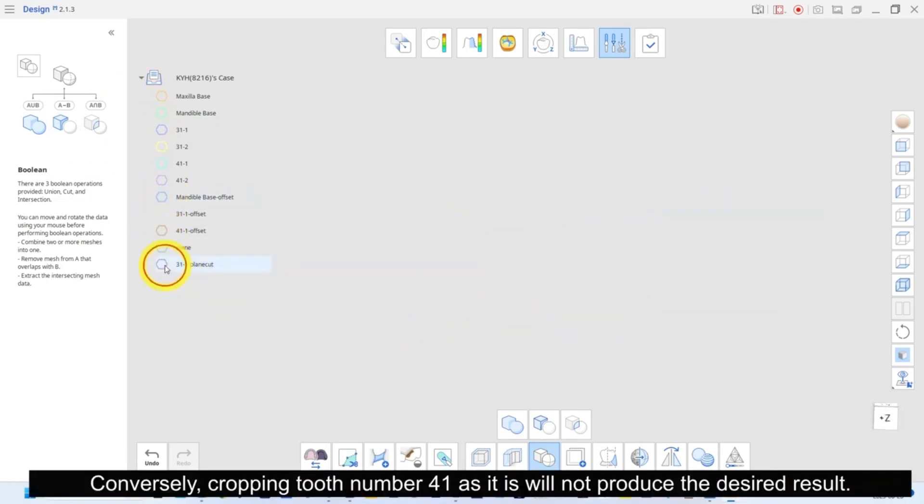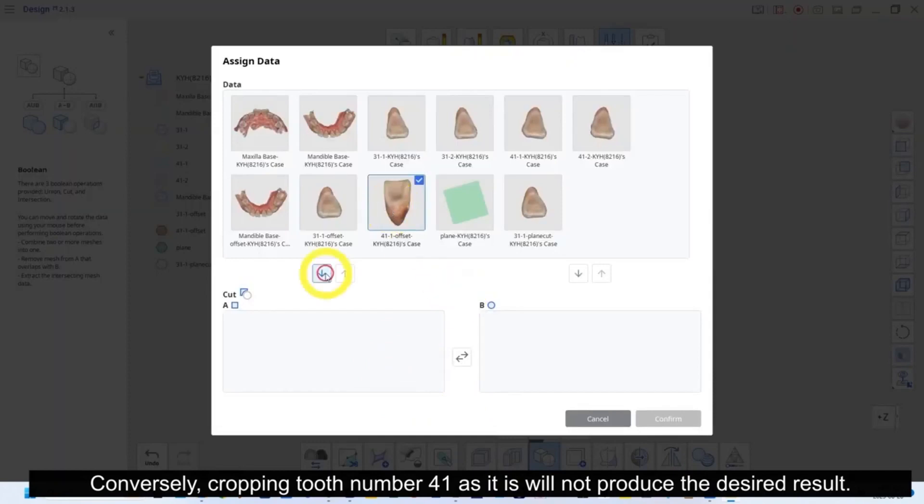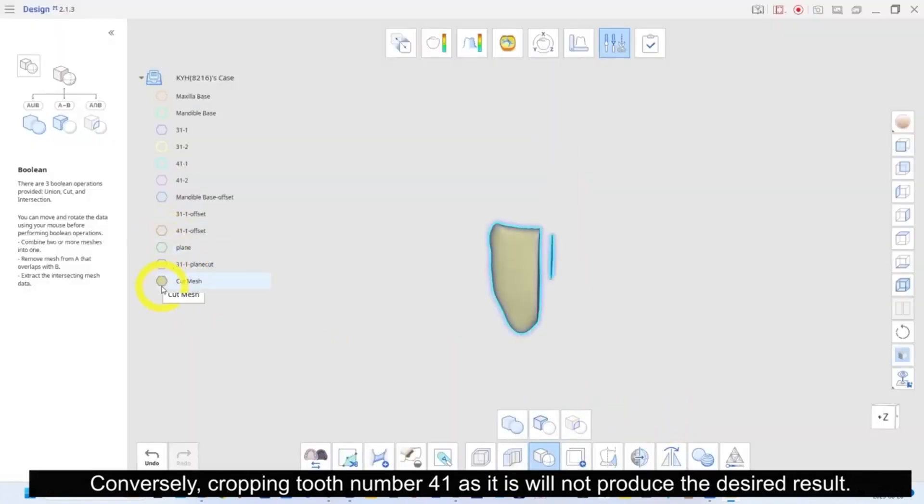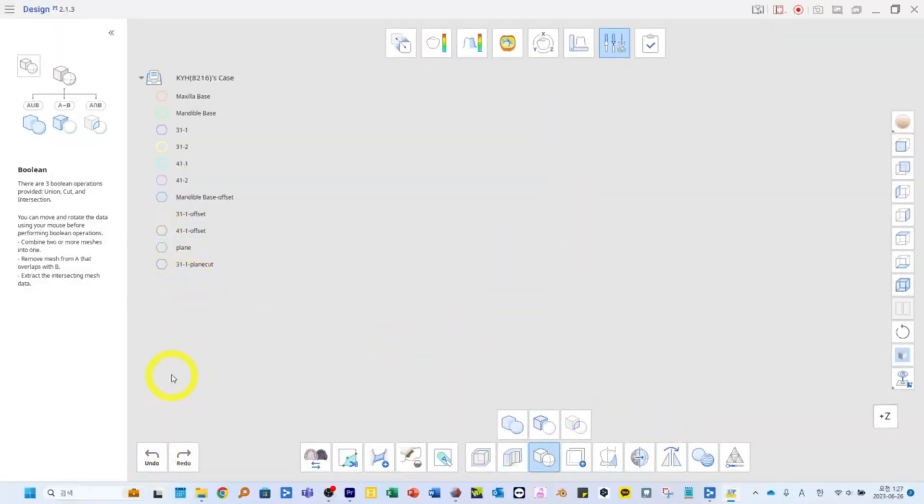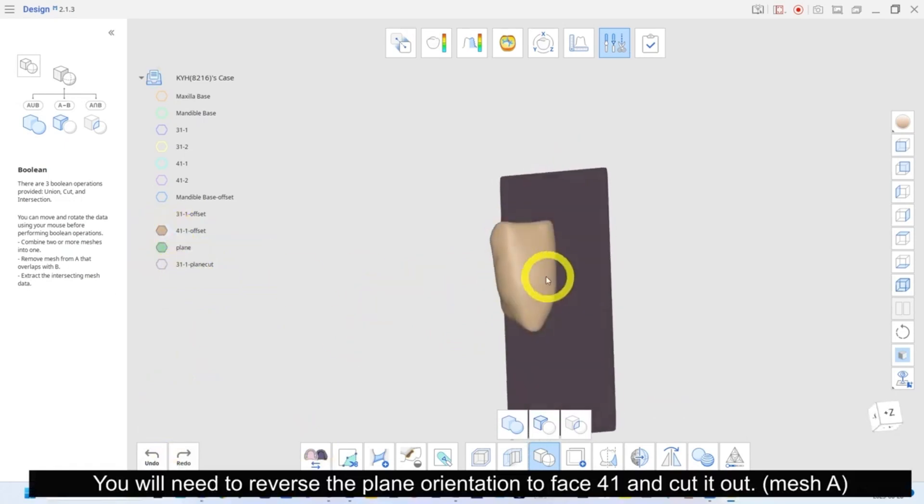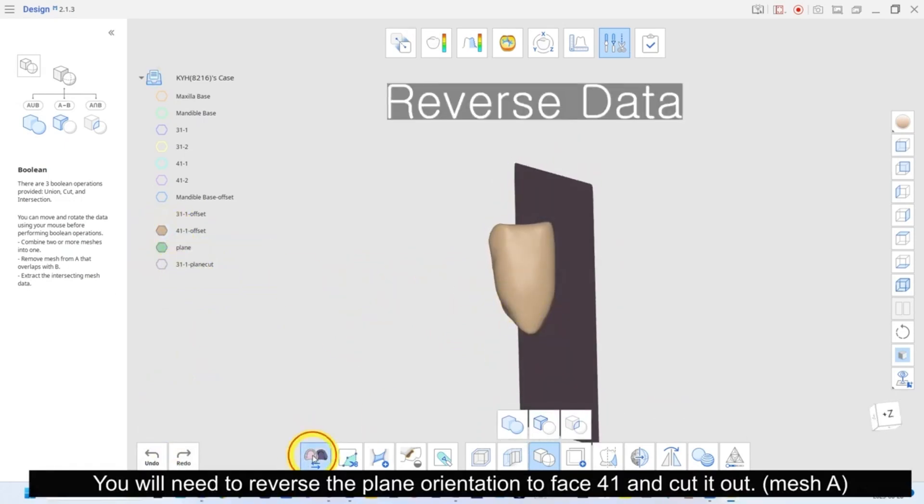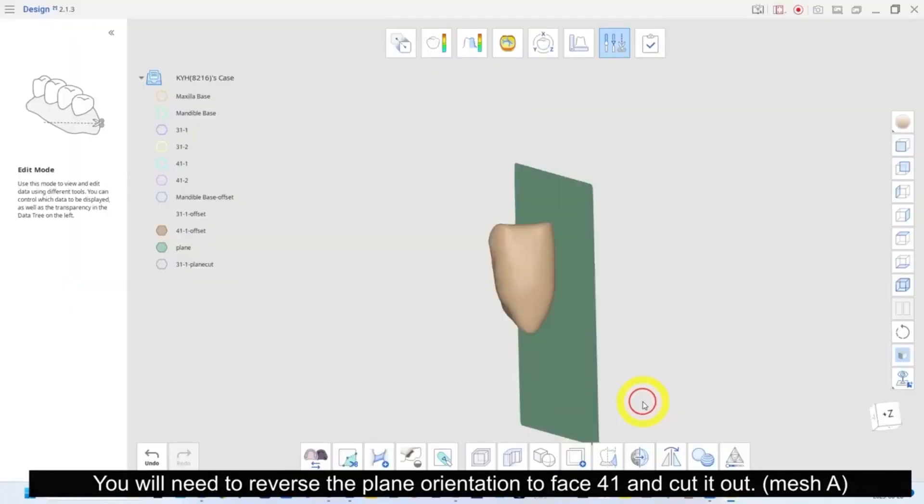Conversely, cropping tooth number 41 as it is will not produce the desired result. You will need to reverse the plane orientation to face 41 and cut it out.